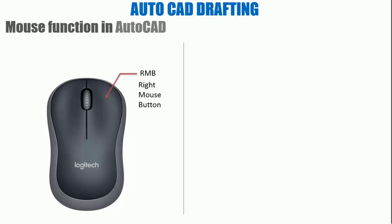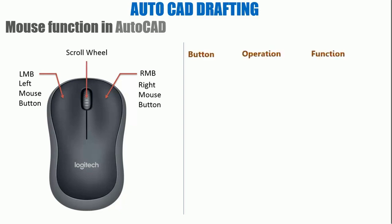First, I'll cover the LMB — left mouse button — and the RMB — right mouse button — and the scroll wheel in the middle. For the LMB, the operation is click. Clicking the left mouse button performs selection. You can also click, hold, and drag the LMB, which gives the function of moving a selected object. How this is exactly done in AutoCAD software, we'll learn a little bit later.